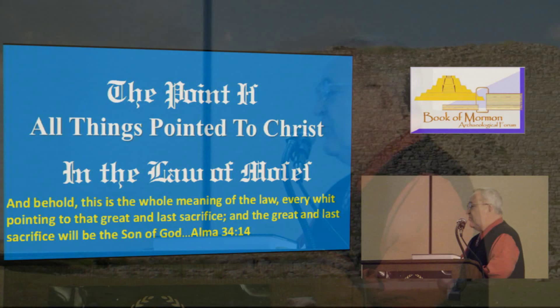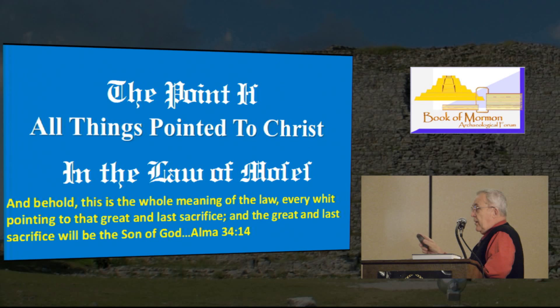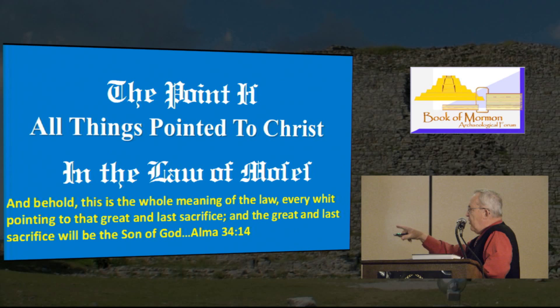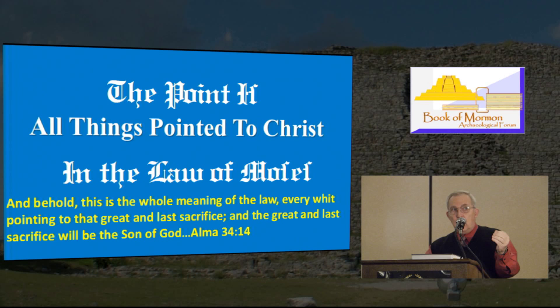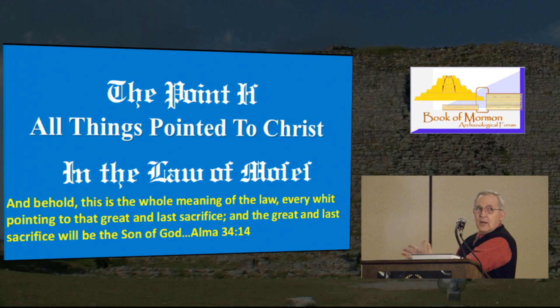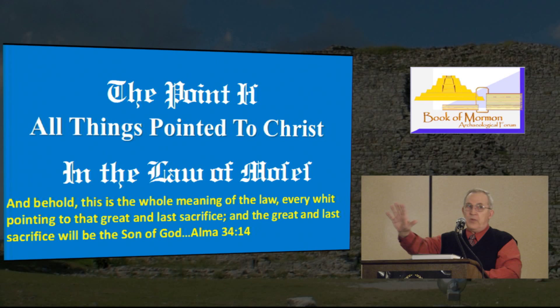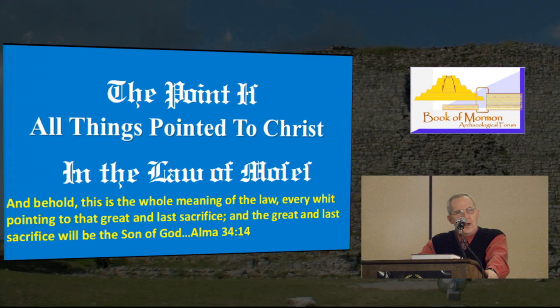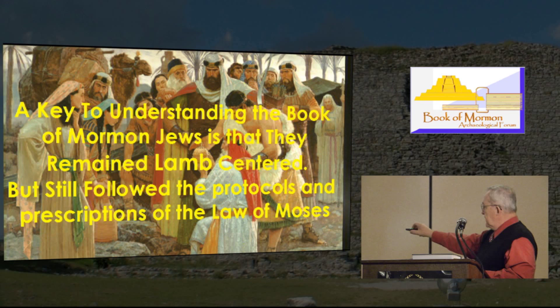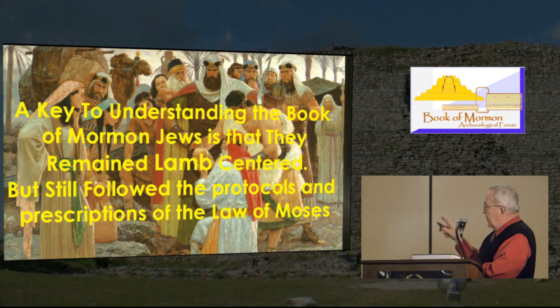The point is that all things pointed to Christ in the law of Moses. Quoting Alma 34: 'This is the whole meaning of the law, every whit pointing to that great and last sacrifice. And the great and last sacrifice will be the Son of God.' Is there any question that the people in the Book of Mormon had a correct concept and understanding? They weren't encumbered by all those traditions picked up in the Babylonian captivity. They kept that pure law and were looking forward — not for the lion, but for the Lamb of God who's going to come and take care of the atonement. The Book of Mormon is another testament of Jesus Christ.